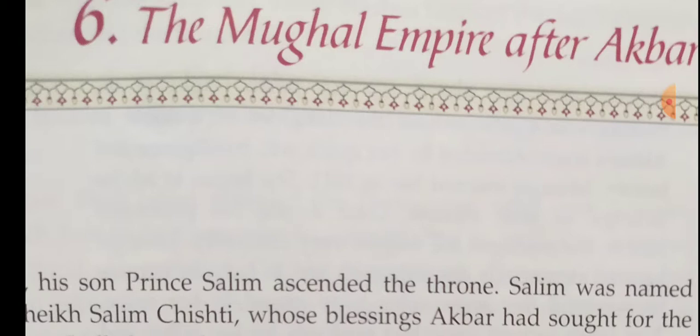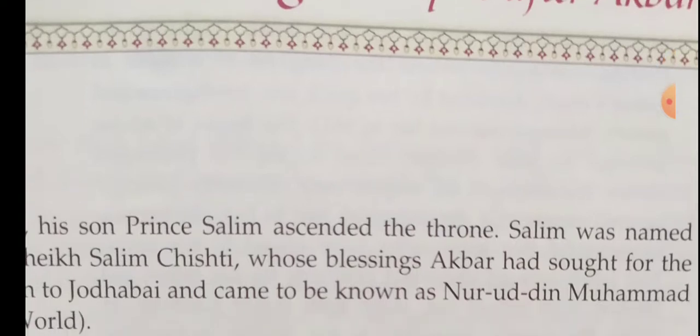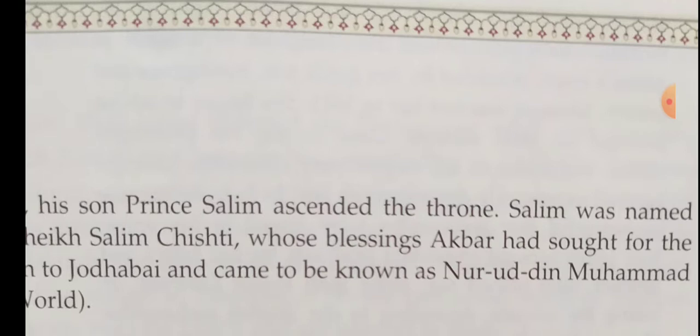After Akbar's death in 1605, his son Prince Salim ascended the throne. Salim was named after the famous Sufi saint Sheikh Salim Chisti. Salim was born to Jodha Bhai and came to be known as Nuruddin Muhammad Jahangir.